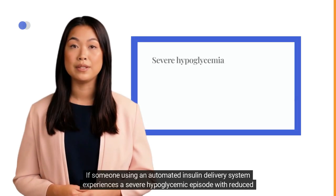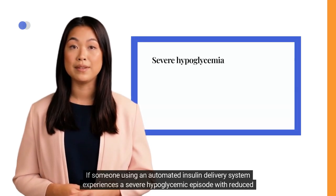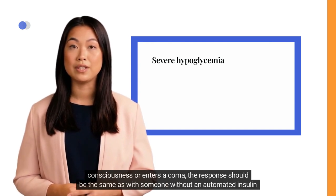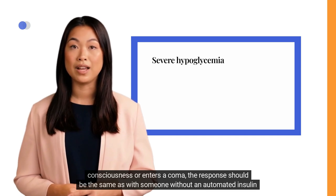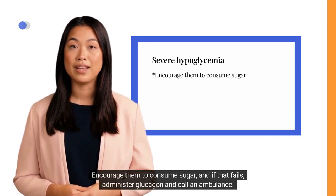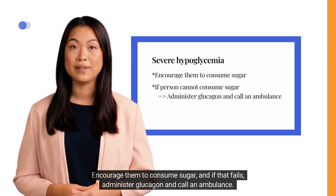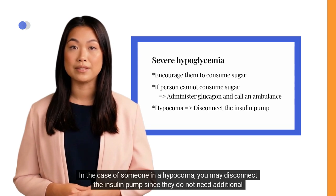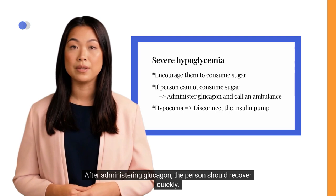If someone using an automated insulin delivery system experiences a severe hypoglycemic episode with reduced consciousness or enters a coma, the response should be the same as without an automated insulin delivery system. Encourage them to consume sugar, and if that fails, administer glucagon and call an ambulance. In the case of someone in a hypocoma, you may disconnect the insulin pump since they do not need additional insulin. After administering glucagon, the person should recover quickly.